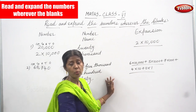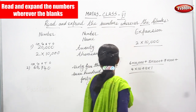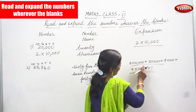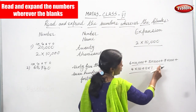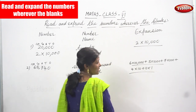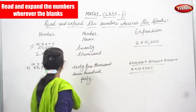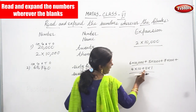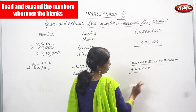This is the number in words, and now the expansion form. So what is this? 65,000: 6 into 10,000, plus 5 into 1,000. Next, hundreds — how many hundreds? 700. So 7 into 100, plus then 40: 4 into 10, plus 0 into 1.